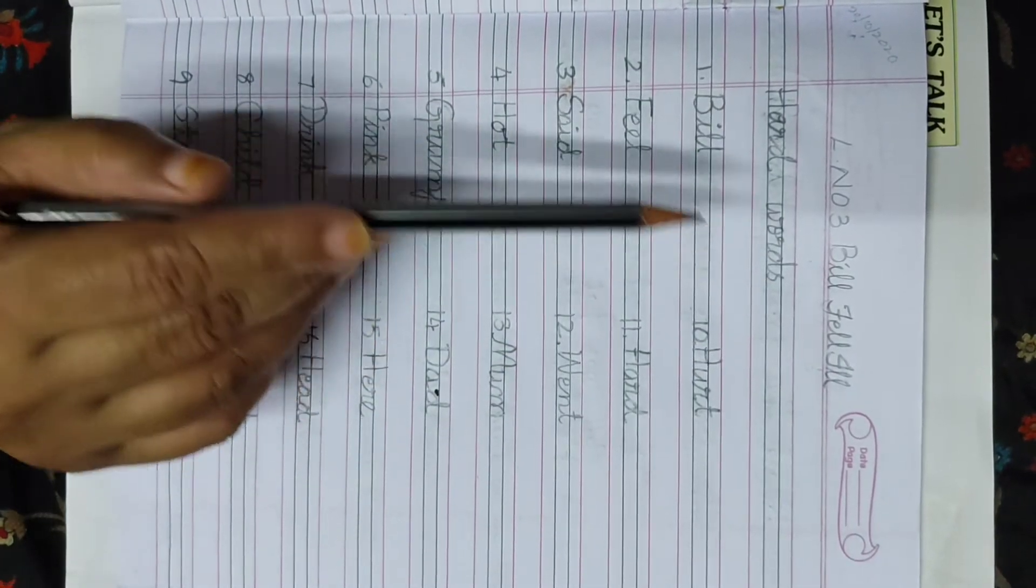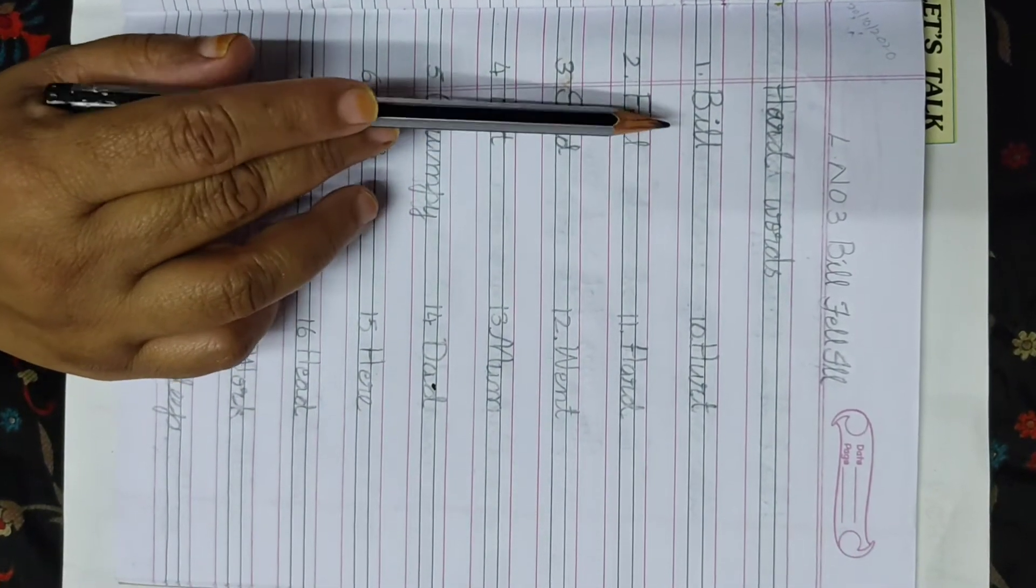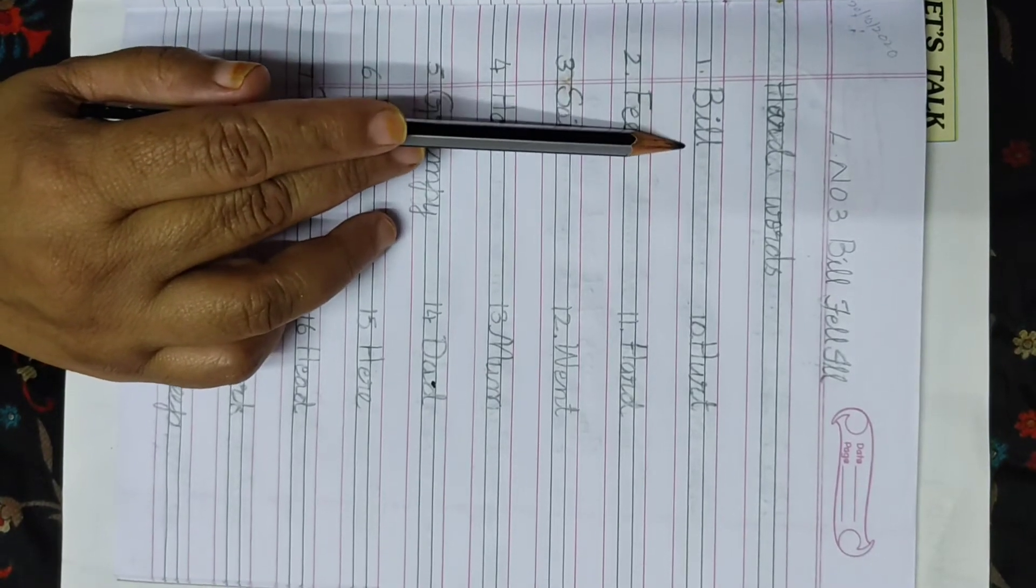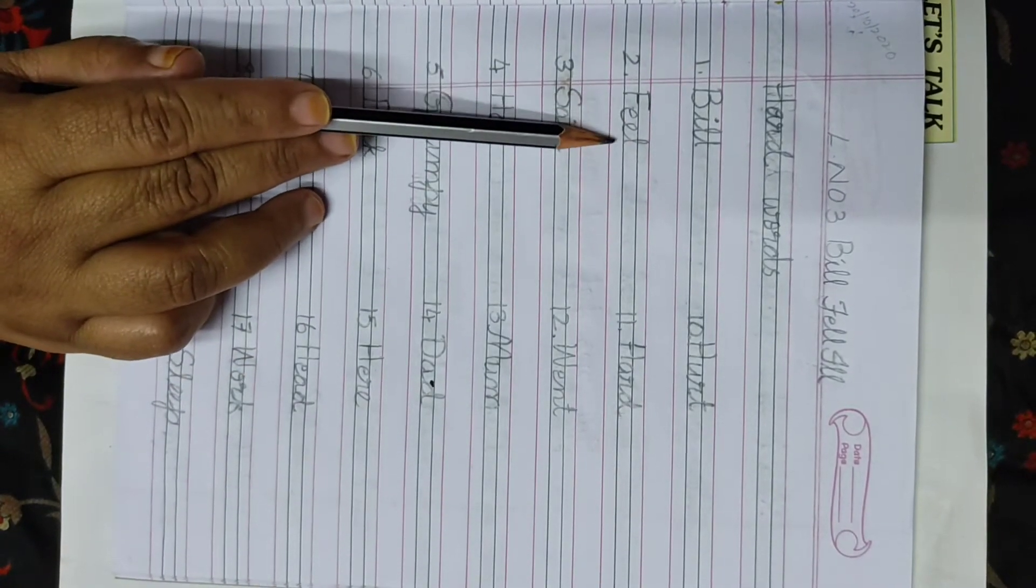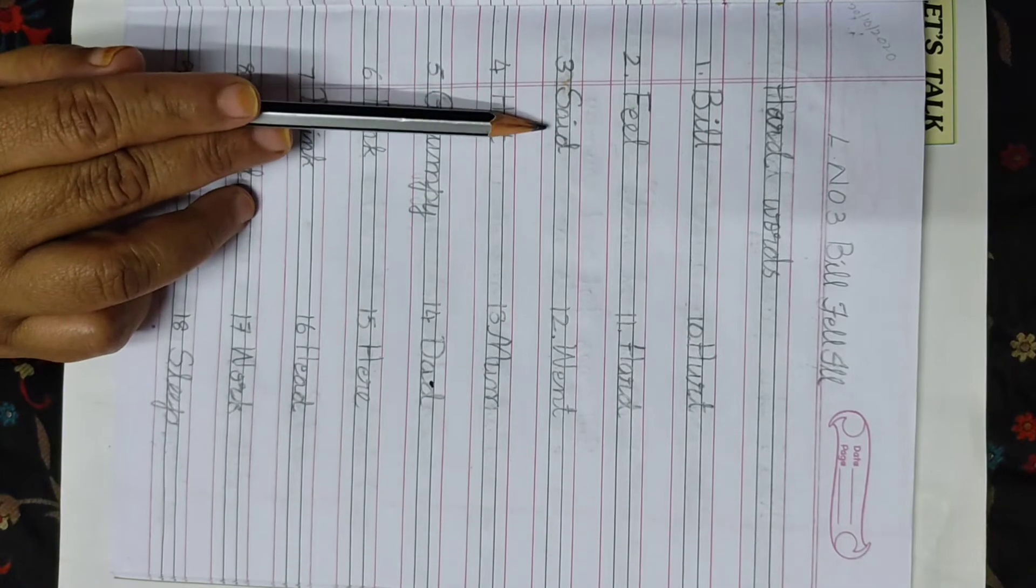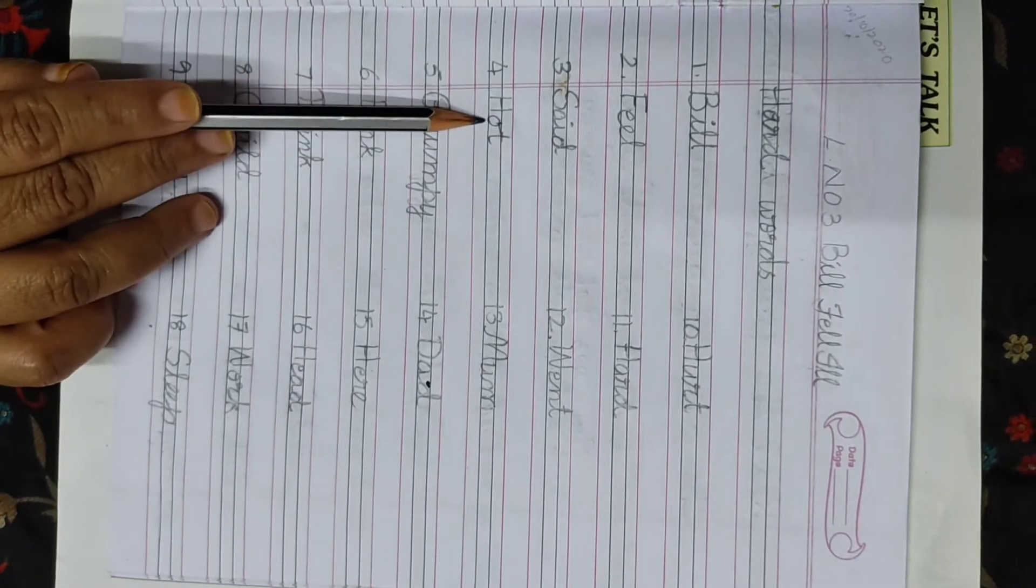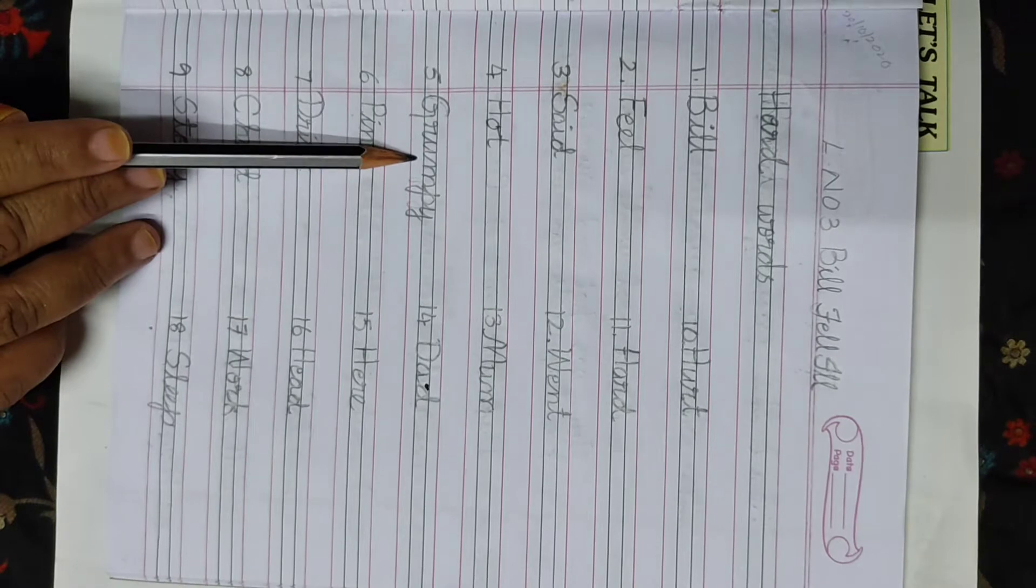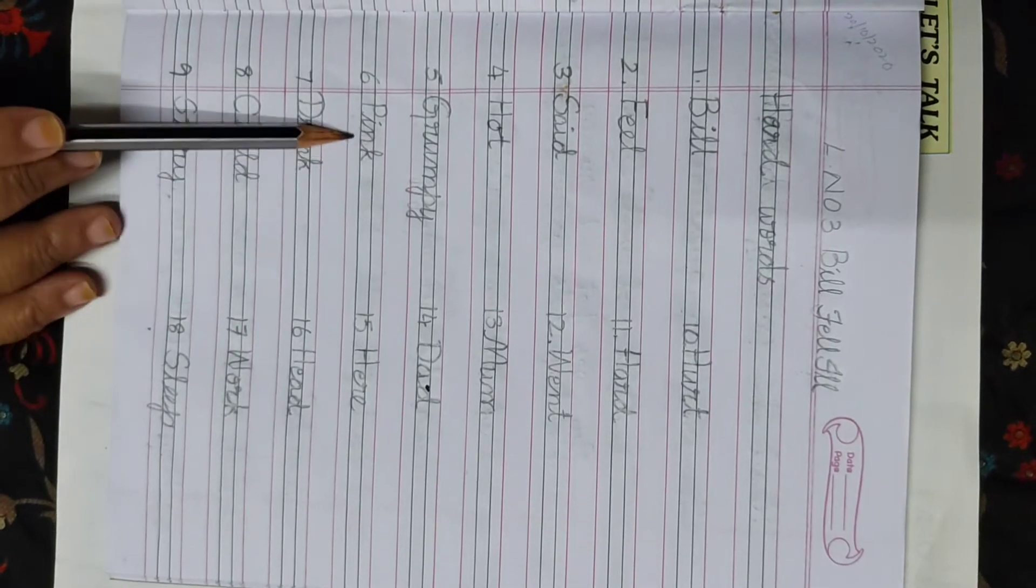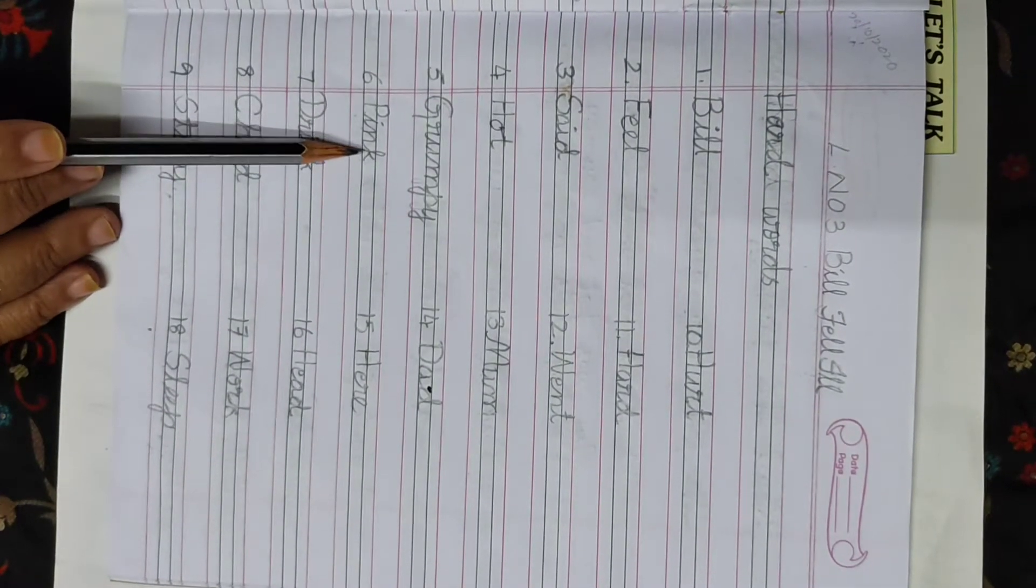Hard words. Students please repeat after me. B.I.L.L. Bill. F.E.E.L. Feel. S.A.I.D. Said. H.O.T. Hot. G.R.U.M.P.Y. Grumpy. P.I.N.K.